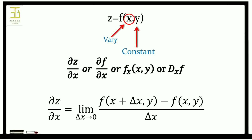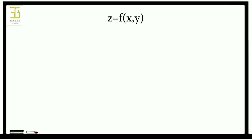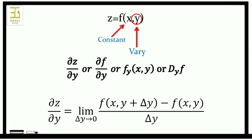The derivative of z with respect to y, keeping x as constant, is called the partial derivative of z with respect to y. We can denote it as dou z by dou y, or dou f by dou y, or f_y of x comma y, or d_y f. Using limits: dou z by dou y is equal to limit as delta y tends to 0 of f(x, y plus delta y) minus f(x, y), divided by delta y.